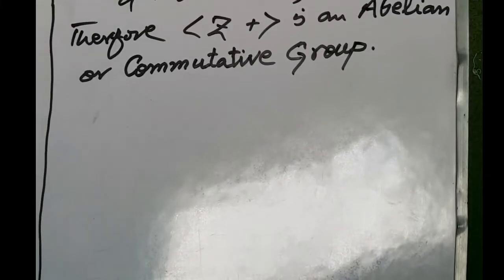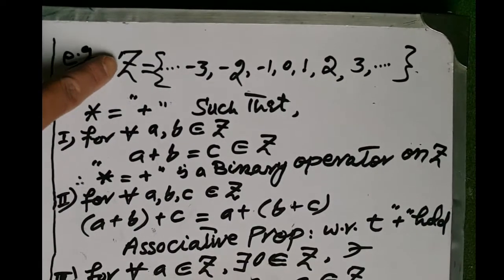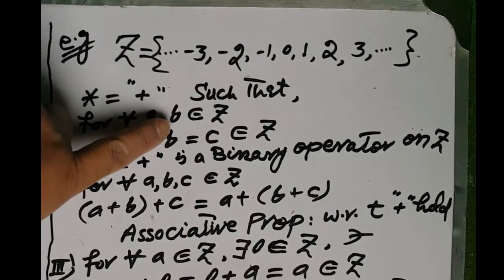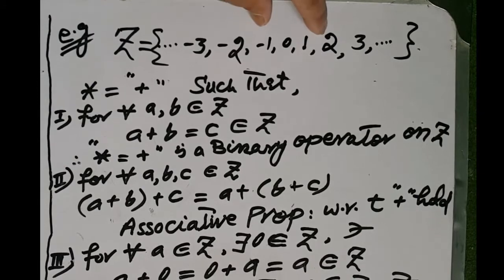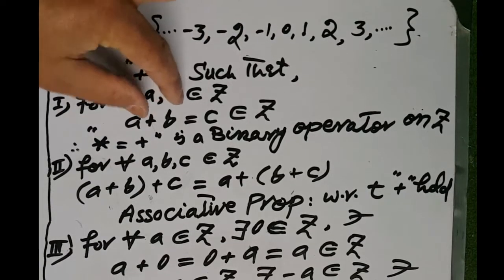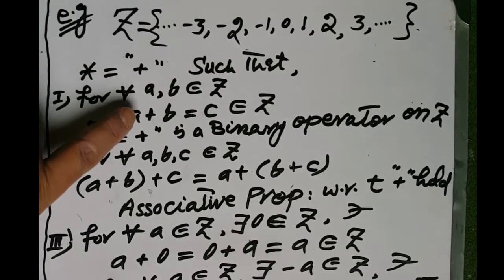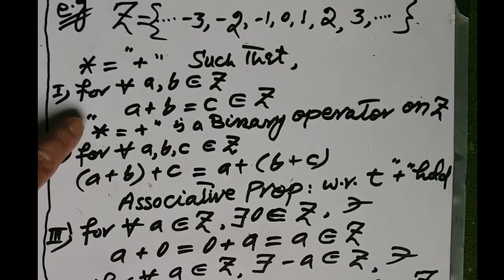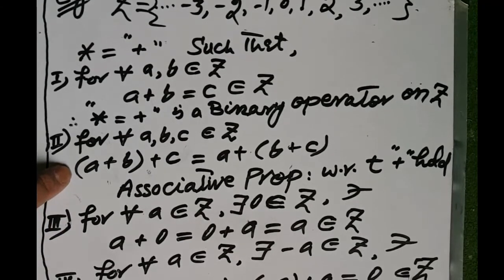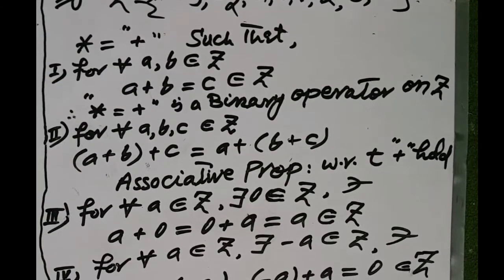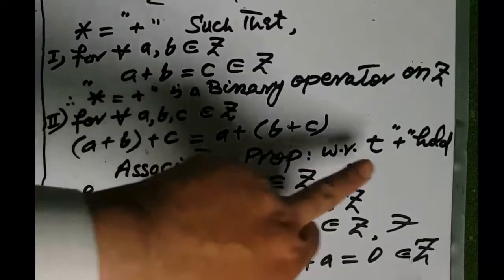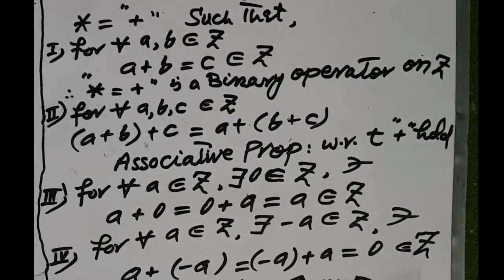Then in this case, the group G is called a commutative group or an abelian group. For example, consider the set Z of all integers. We have to check that Z with respect to addition is a group. Since for each two elements a, b belonging to Z, the sum of two integers is an integer, so addition is a binary operator on Z. Also, the associative property with respect to addition holds in Z, that is, for any three integers a, b, c: a plus (b plus c) is equal to (a plus b) plus c.